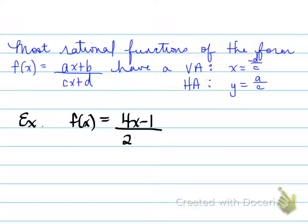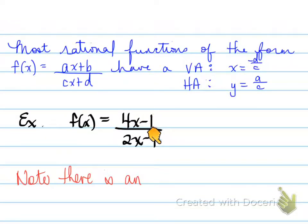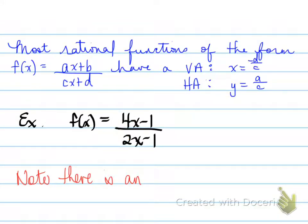Looking at this example, the vertical asymptote is going to be the restriction on the bottom, which is x = 1/2. The horizontal asymptote is found by taking the coefficients of the highest power — x — in both numerator and denominator, and dividing those coefficients, which gives you 2. Another way to do it is by long division.